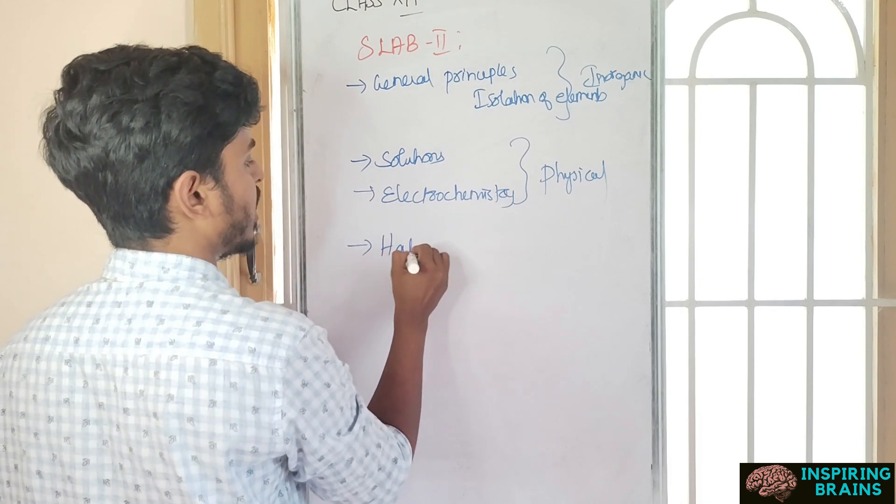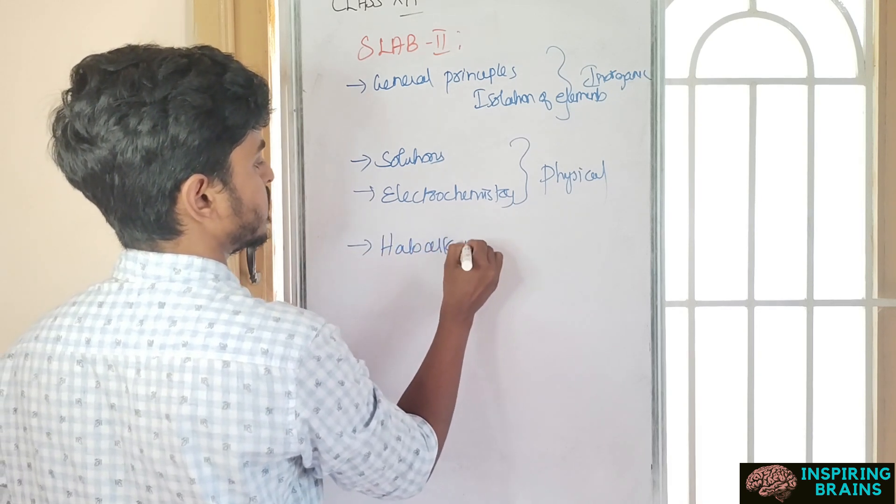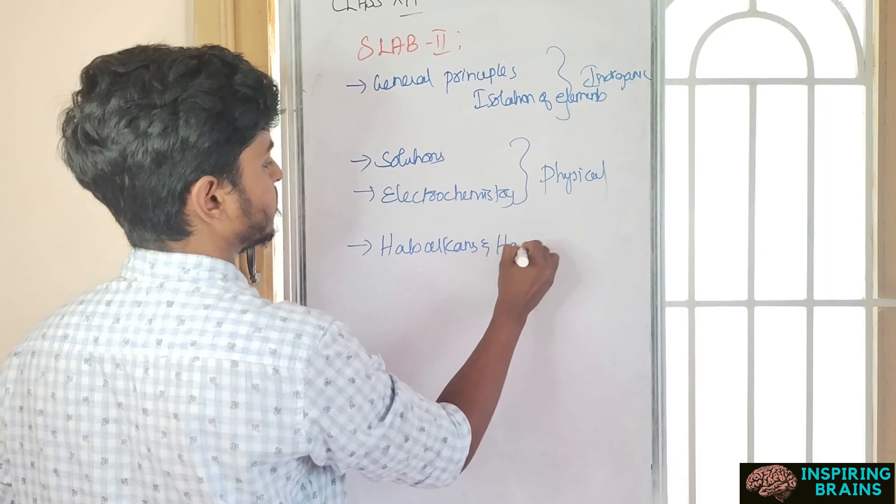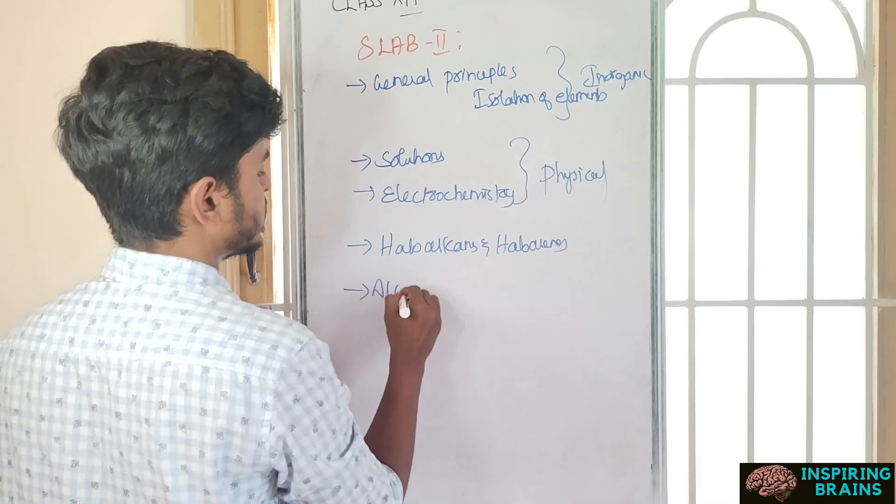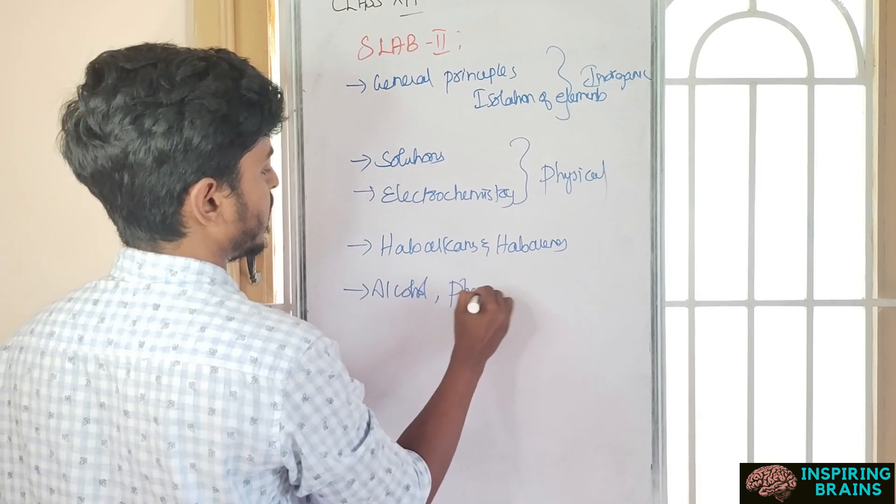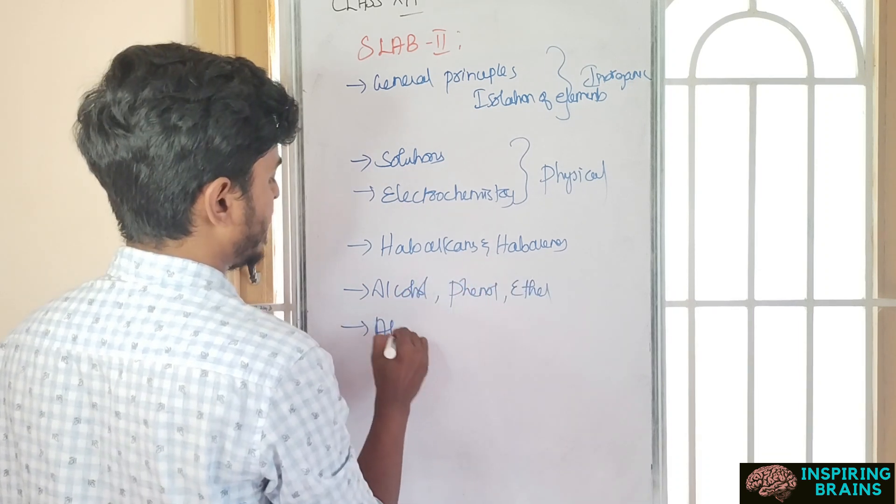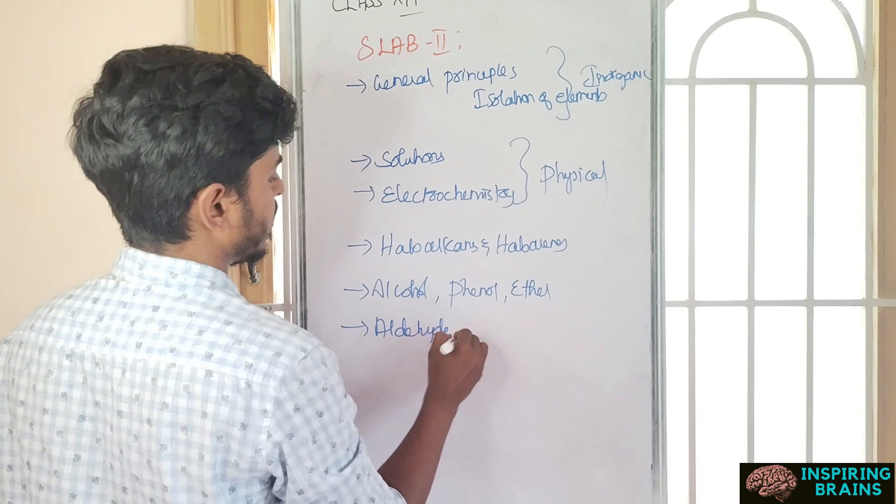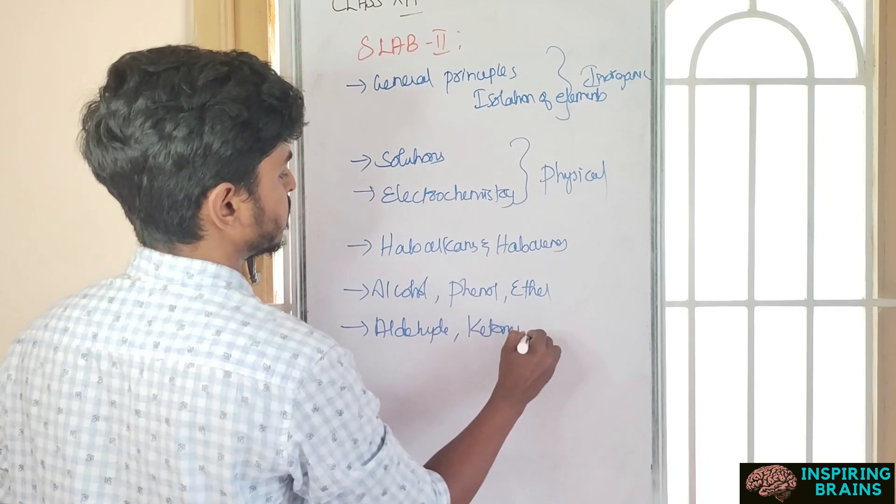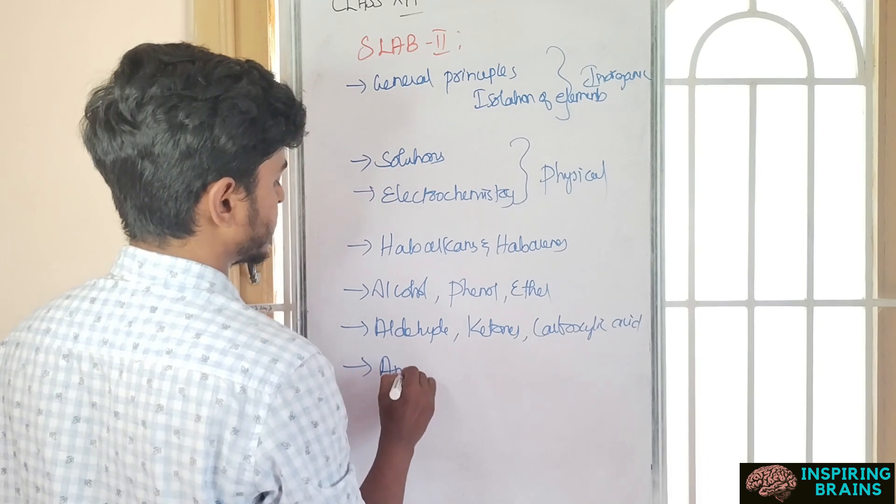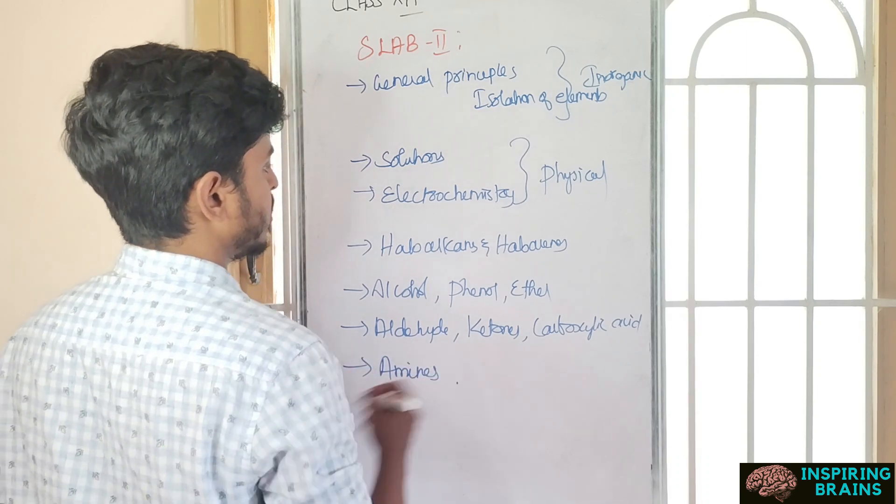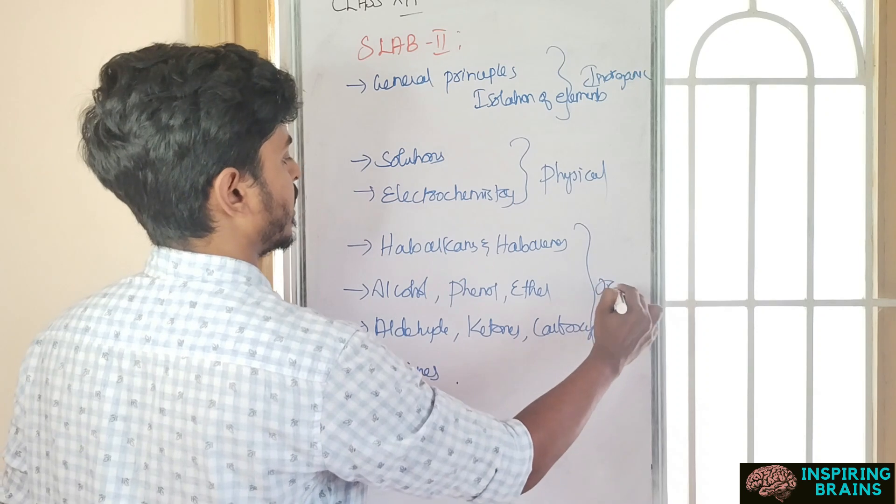Go with haloalkanes and haloarenes - very easy. After that alcohols phenols ether, then aldehydes ketones carboxylic acid, and then amines. This is all about organic.